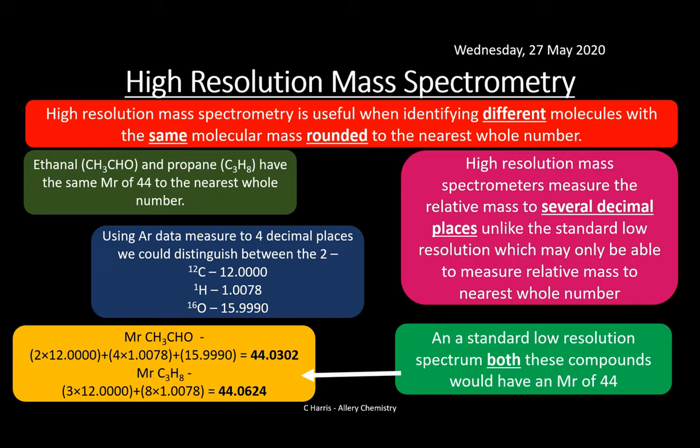To summarise mass spectrometry: you need to know what a mass spectrum looks like, what M plus, M plus 1, and M plus 2 peaks are, fragmentation patterns including the chlorine three-to-one ratio, and the advantages of high-resolution mass spectrometry for distinguishing molecules of the same molecular mass. Now we're going to look at another type of spectroscopy: NMR.